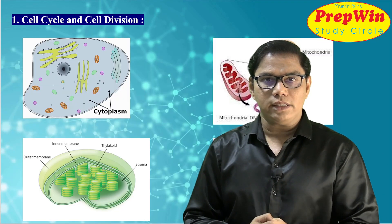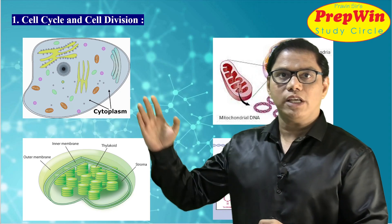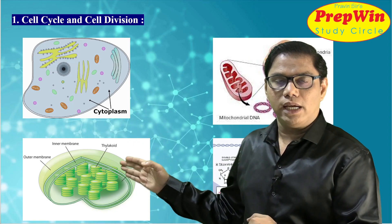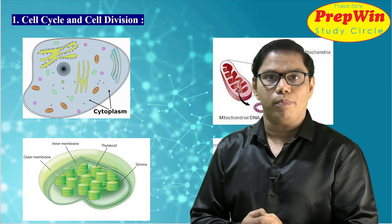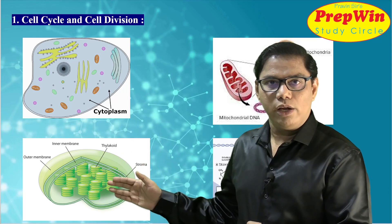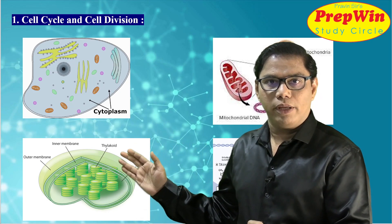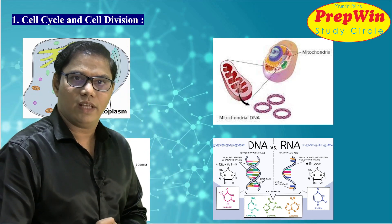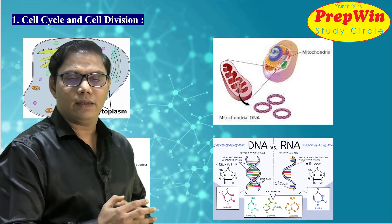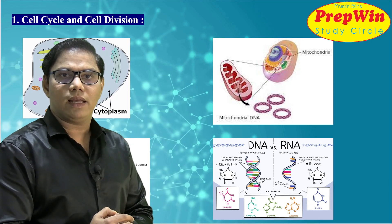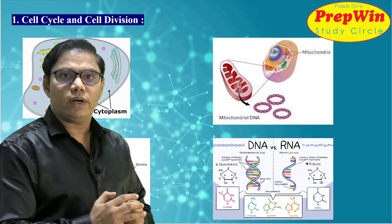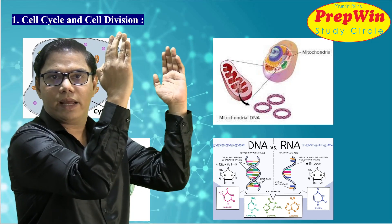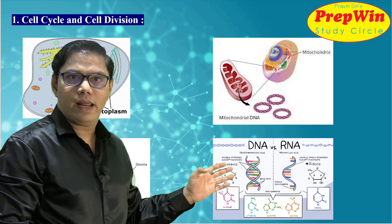First is cytoplasm — the watery part inside the cell. Below that is chloroplast — chloroplast is found only in the plant cell and not in the animal cell. Photosynthesis happens in the chloroplast. Then comes mitochondria — it is called the powerhouse of the cell. After that, DNA and RNA. DNA is a double helix structure — like a ladder, but interwoven. RNA, on the other hand, is a single strand.